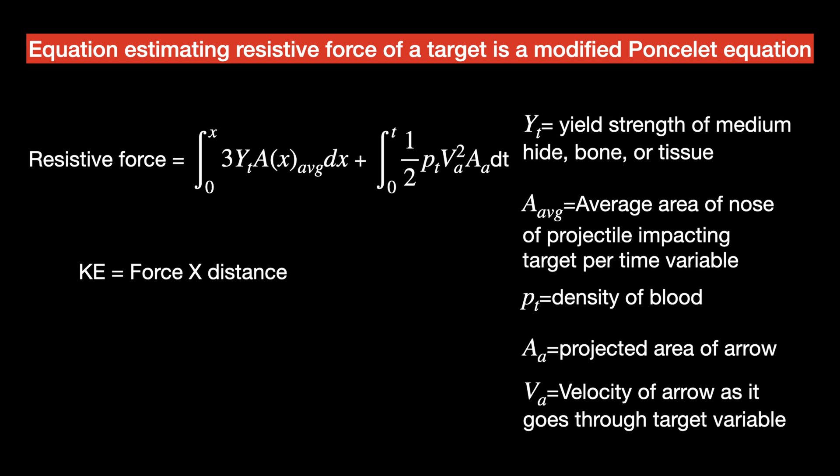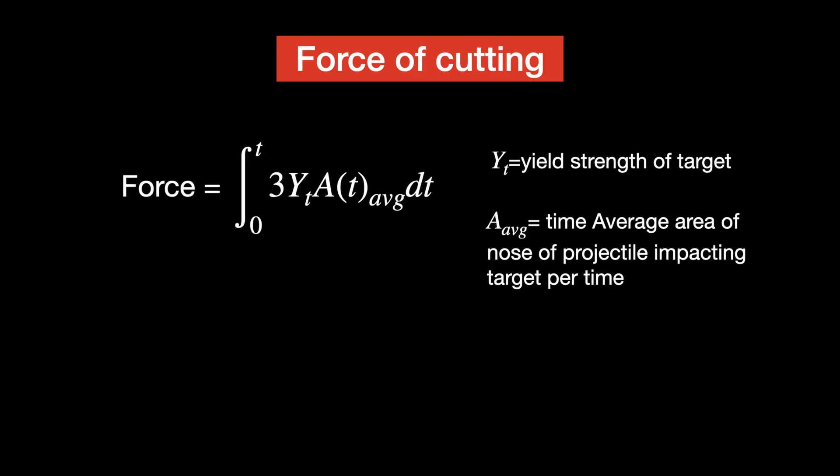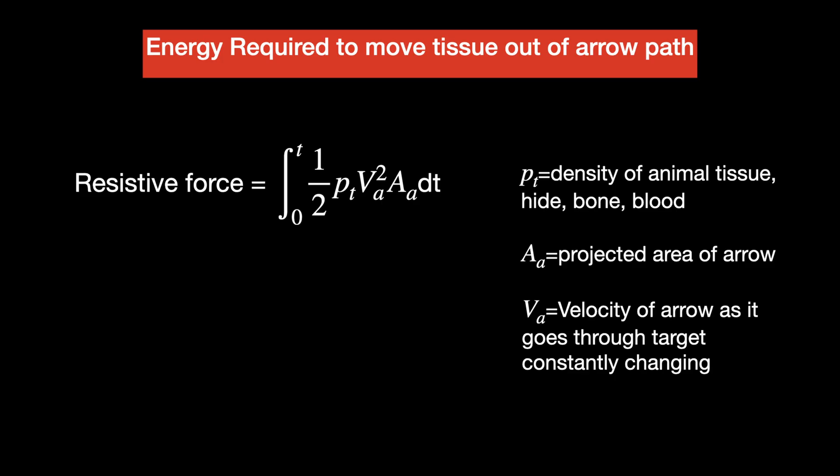The Poncelet equation is a combination of terms. When we're talking about what force or energy is necessary to cause penetration, there are a couple of things to look at. First, what is the force needed to break the bonds of material? For tissue, this would be the force of cutting — what does the broadhead need to do to separate that tissue? Through extensive testing, it's found that generally the force needed to break bonds is three times the yield strength times the area. This is a time-average derivative. The next part is the arrow has to pass through the medium, pushing tissue out of its path to continue on its forward trajectory. This looks very similar to drag — that's the resistive force needed to move tissue.